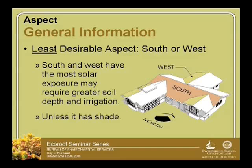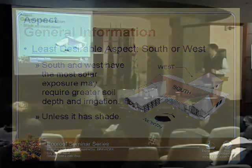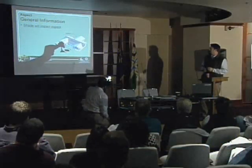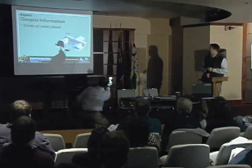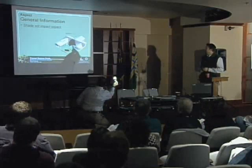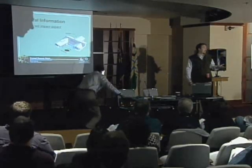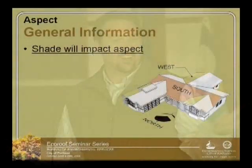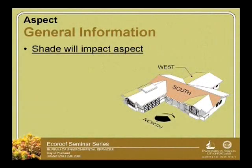We forgot to include an example showing that shade will often impact the roof — there we go. A lot of times in Portland, we've got a lot of mature trees, and oftentimes regardless of whether your building is south, west, or north facing, you have this giant oak or maple that is shadowing the entire rooftop. That will have a significant effect — if not a more significant effect — than your aspect will on your rooftop.